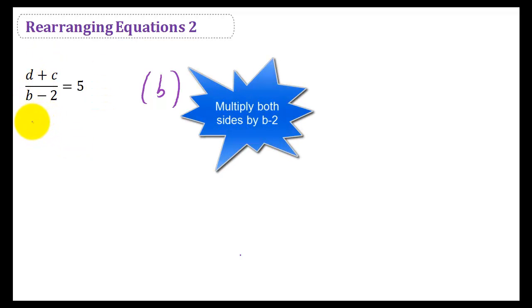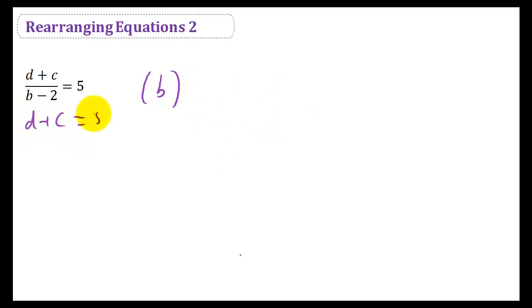On the left-hand side, that would leave us D plus C. And if we times the right-hand side by B minus 2, we get 5 times B minus 2. So remember, you're undoing the divide by B minus 2, so therefore timesing by it just leaves you with the D plus C.